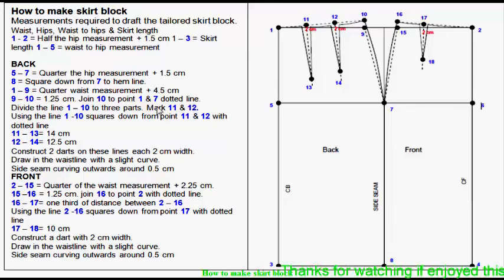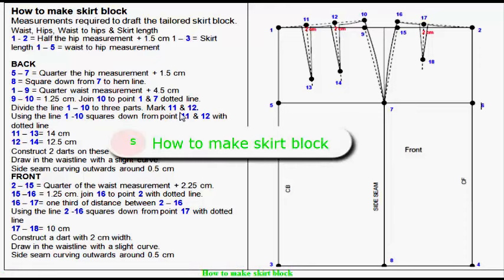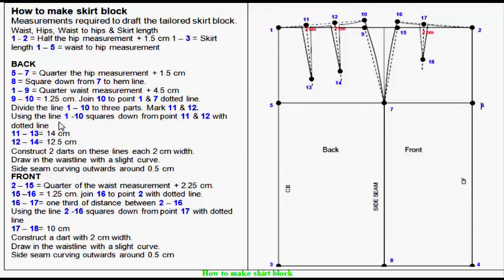Divide the line 1-10 into 3 parts, mark 11 and 12. Using the line 1-10, square down from points 11 and 12 with dotted line.